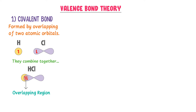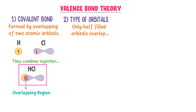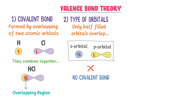The second point of VBT is the type of orbitals. It states that only half-filled orbitals overlap to form a covalent bond. For example, in the case of HCl, the S orbital of hydrogen has one electron and the P orbital of chlorine has one electron, so they are both half-filled and overlap to form a covalent bond. If the S orbital has two electrons while the P orbital has one, the covalent bond does not form because the S orbital is complete. Hence, VBT teaches us that a covalent bond is only formed if both orbitals are half-filled, each having one electron.